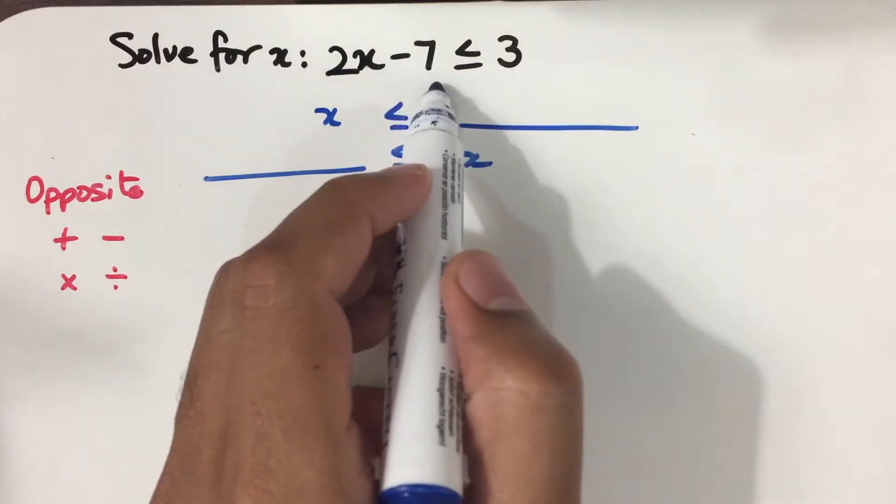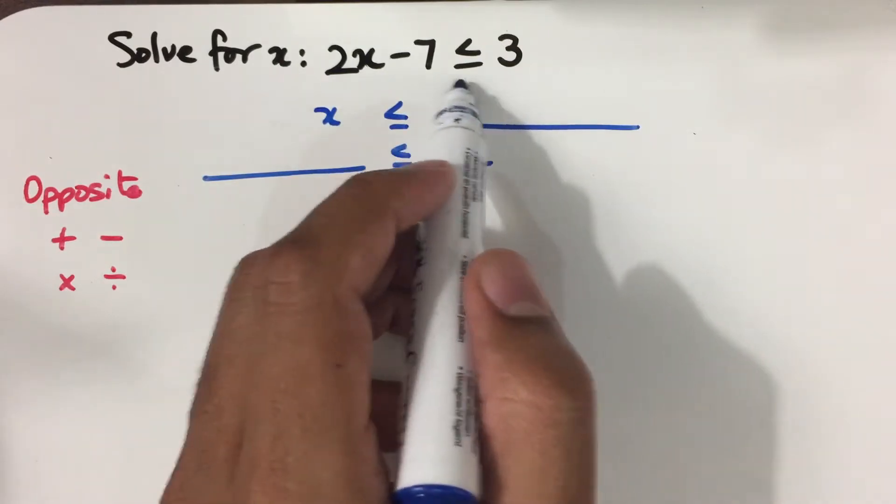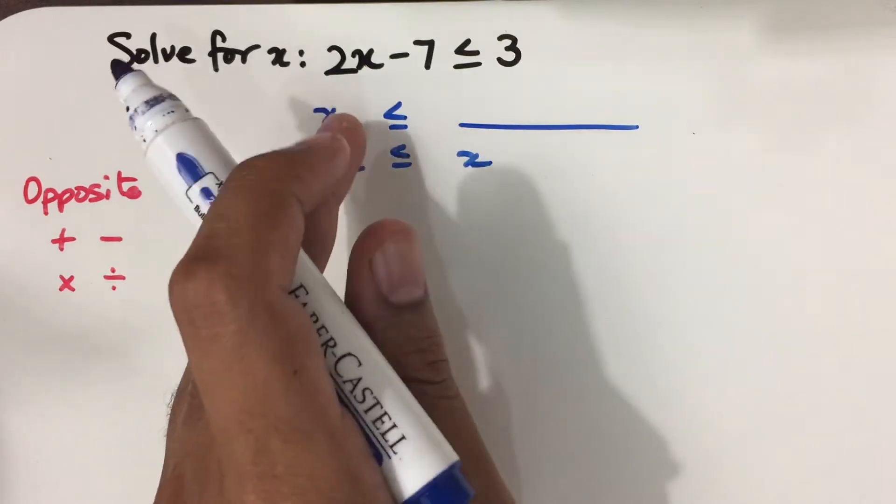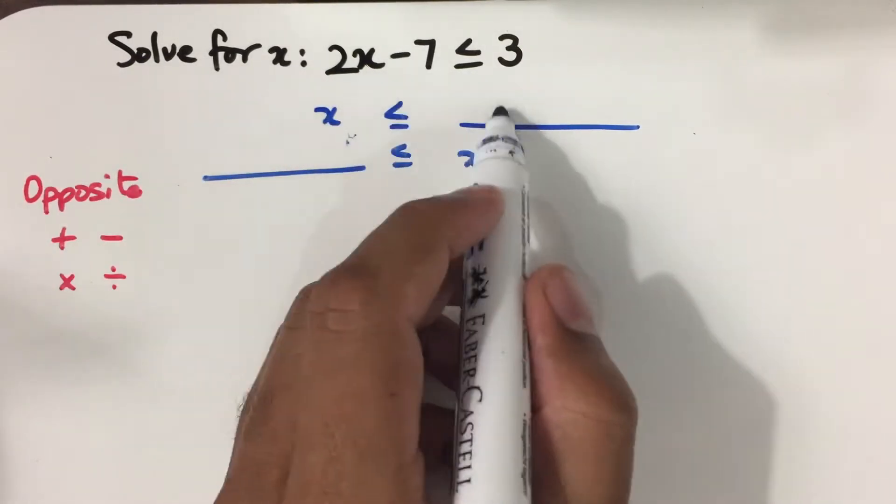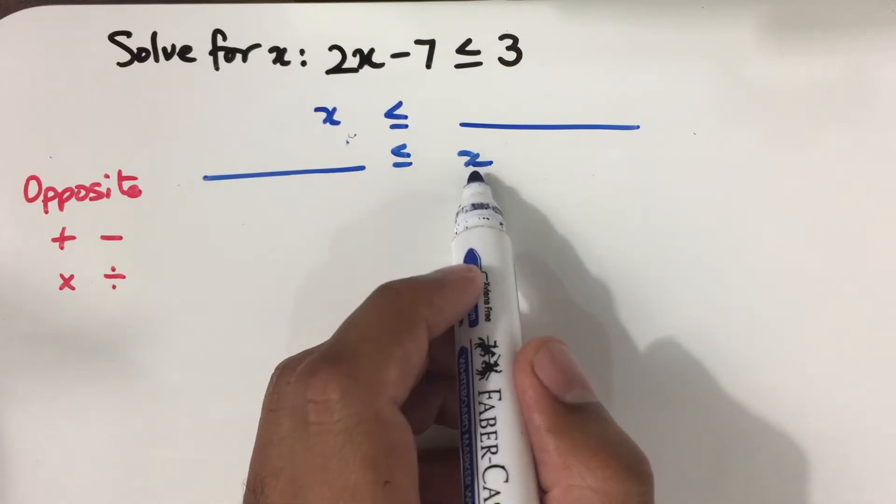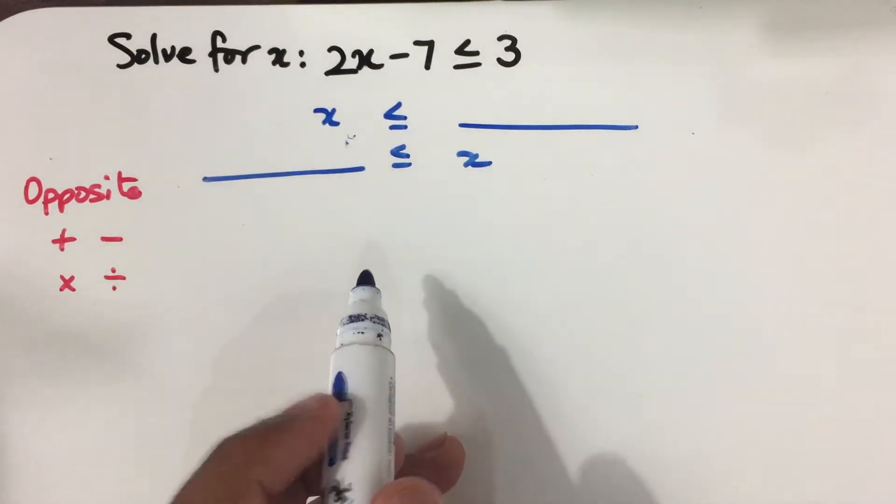Solve for x: 2x minus 7 is less than or equal to 3. So, to solve for this inequality, we can put x on the left-hand side of the inequality and everything else on the right-hand side, or we can put x on the right-hand side and everything else on the left.